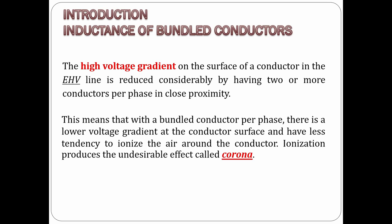Ionization produces the undesirable effect called corona. As we said earlier, in order to reduce the inductance of a transmission line, we can do this by increasing the radius of the conductor — the effective radius of the conductor should be increased — and this can be done by means of bundled conductors.